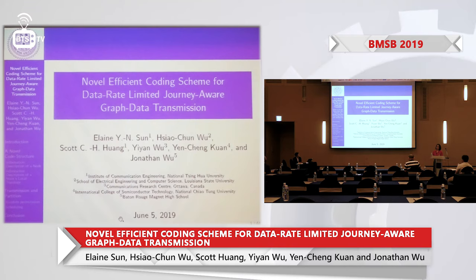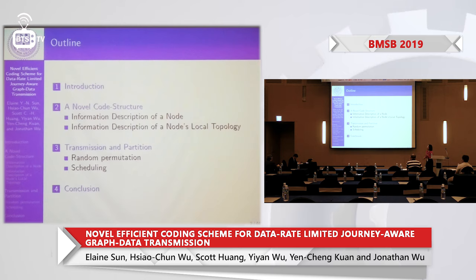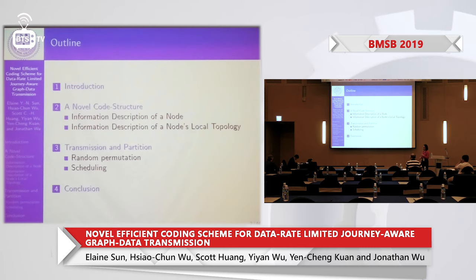My name is Sun Yining, and you may call me Elaine. This is my paper title: 'A Novel Efficient Coding Scheme for Data-Rate Limited Journey-Aware Graph Data Transmission.' My outline covers a short introduction on why I want to do this research, our new scheme's code structure, transmission and partition about adjacency matrix and our new scheme, and finally the conclusion.